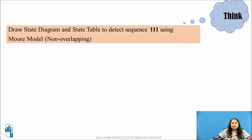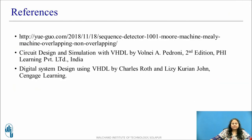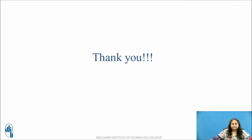Pause this video and based on the method discussed, try to draw the state diagram and state table for the sequence 1, 1, 1, 1 using the Moore model. These are the references used. Thank you.